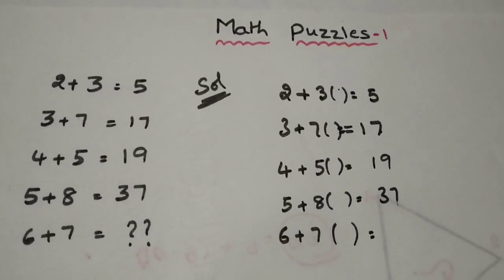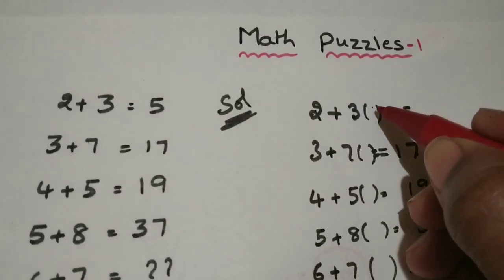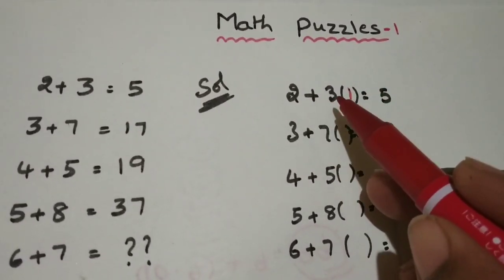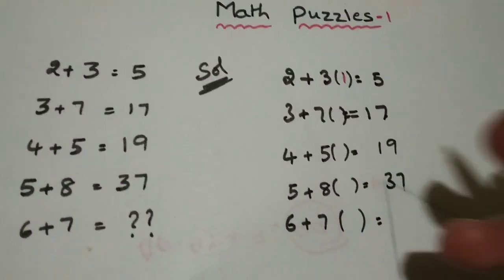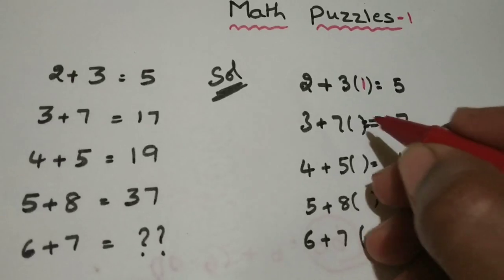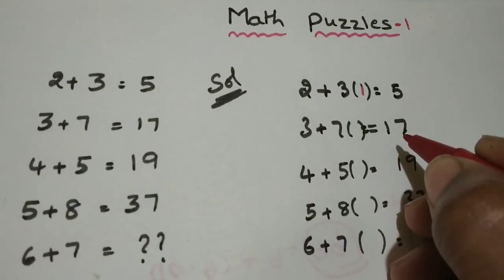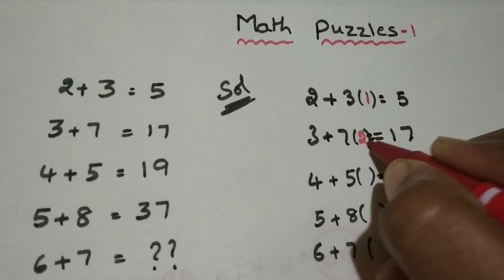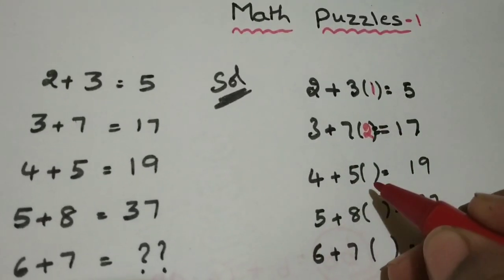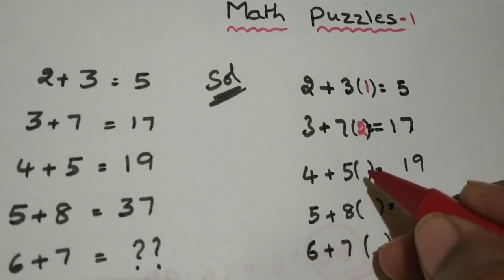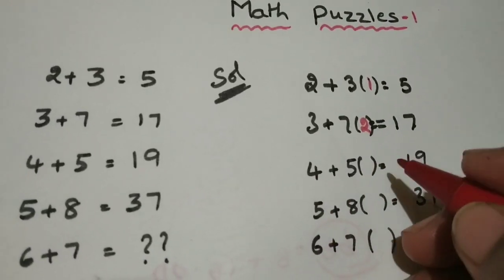Solution is 3 plus 3 into 1, then only 2 plus 3 is equal to 5. And 3 plus 7 into 2, 2 into 7 is 14 plus 3 is 17, then only you are getting 17. Next one is 4 plus 5 into 3. 5 into 3 is 15 plus 4, 19, then only you are going to get.